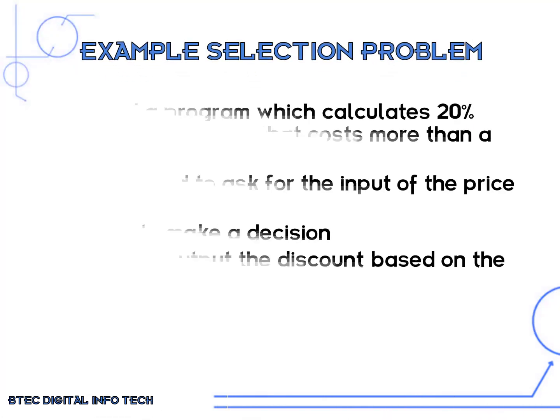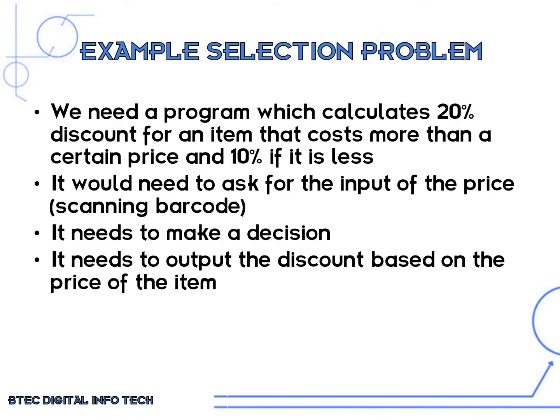As an example we can look at a problem. We need a program which is going to calculate a 20% discount for an item that costs more than a certain price, and 10% if it is less. It would need to ask for the input of a price, make a decision, and output a discount based on the price of the item.